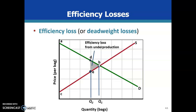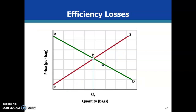We can also have deadweight loss from overproduction. If the allocatively efficient quantity is Q1 and society is now producing quantity Q3, that's overallocation of resources — we're making too many bags, and some of the resources that are making bags could ideally go to the production of something else. That's where opportunity costs come in. Whenever you have deadweight loss, we have a market failure.